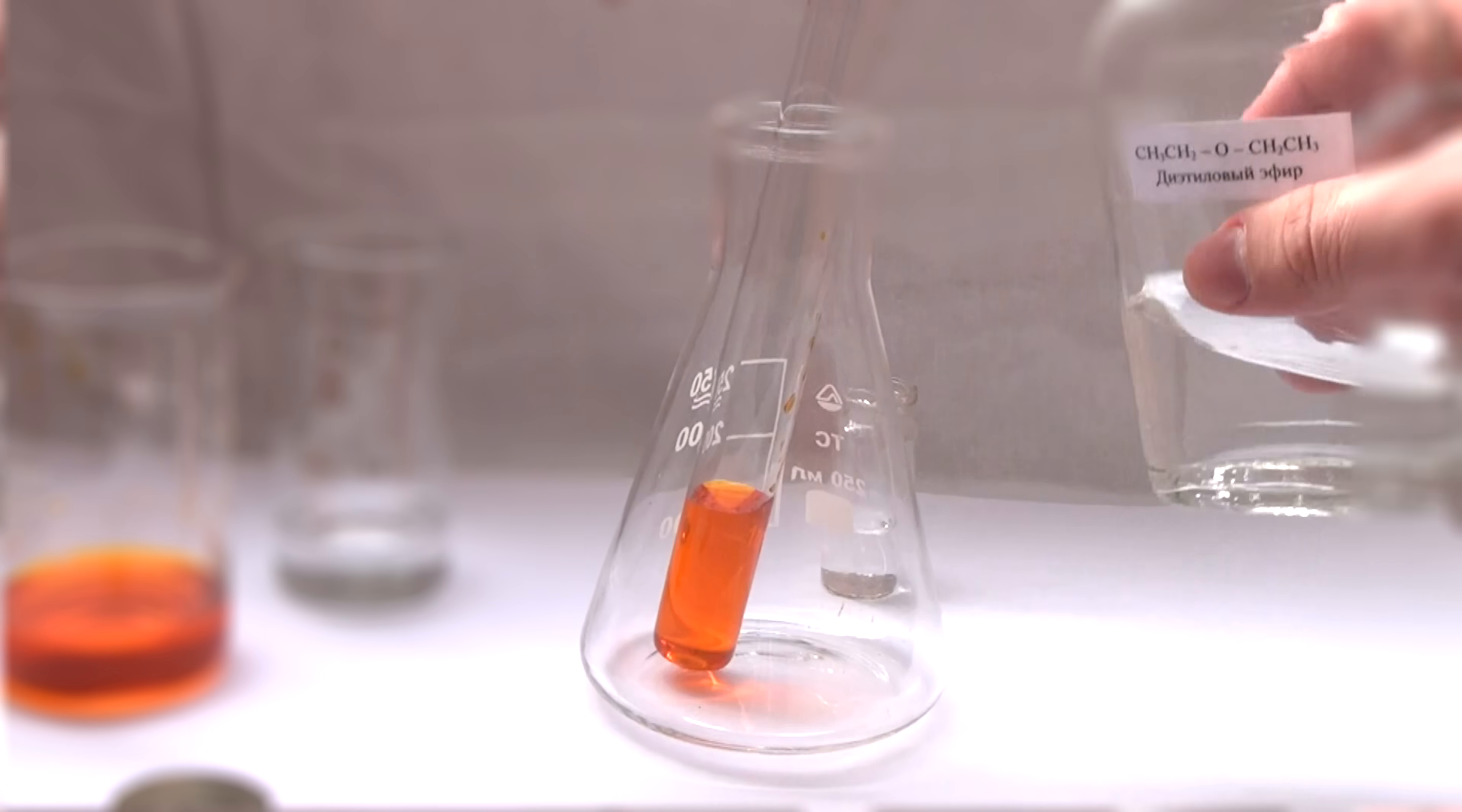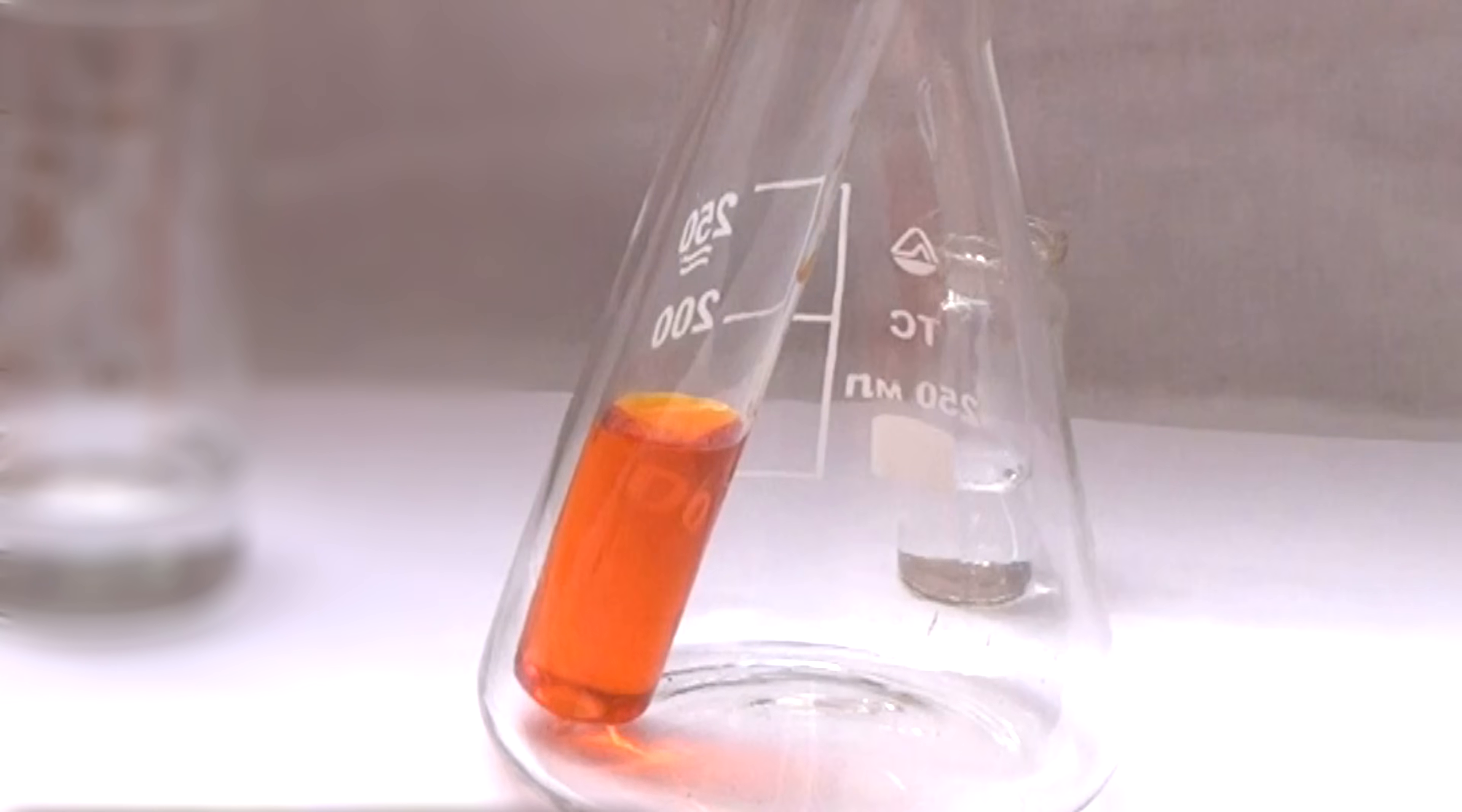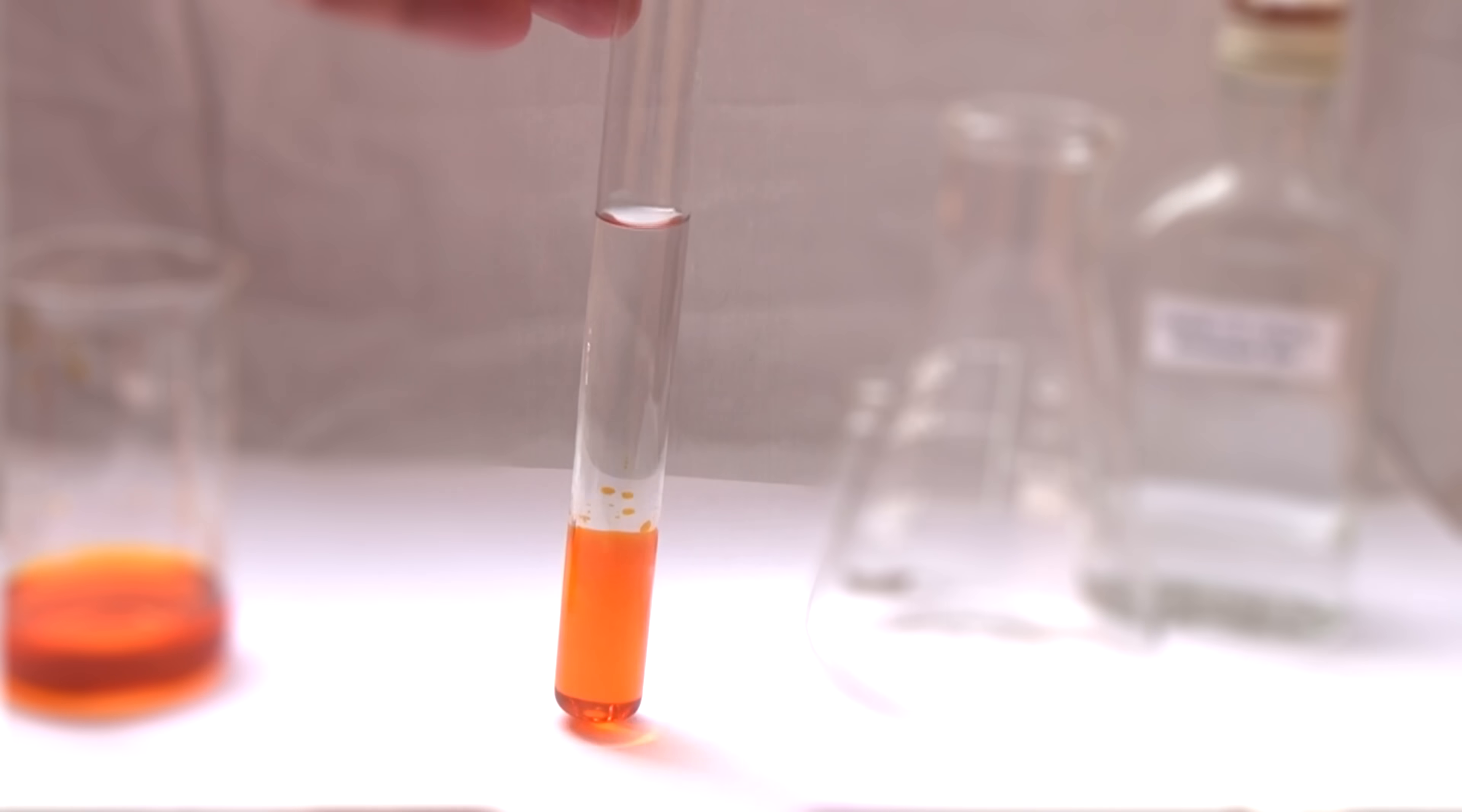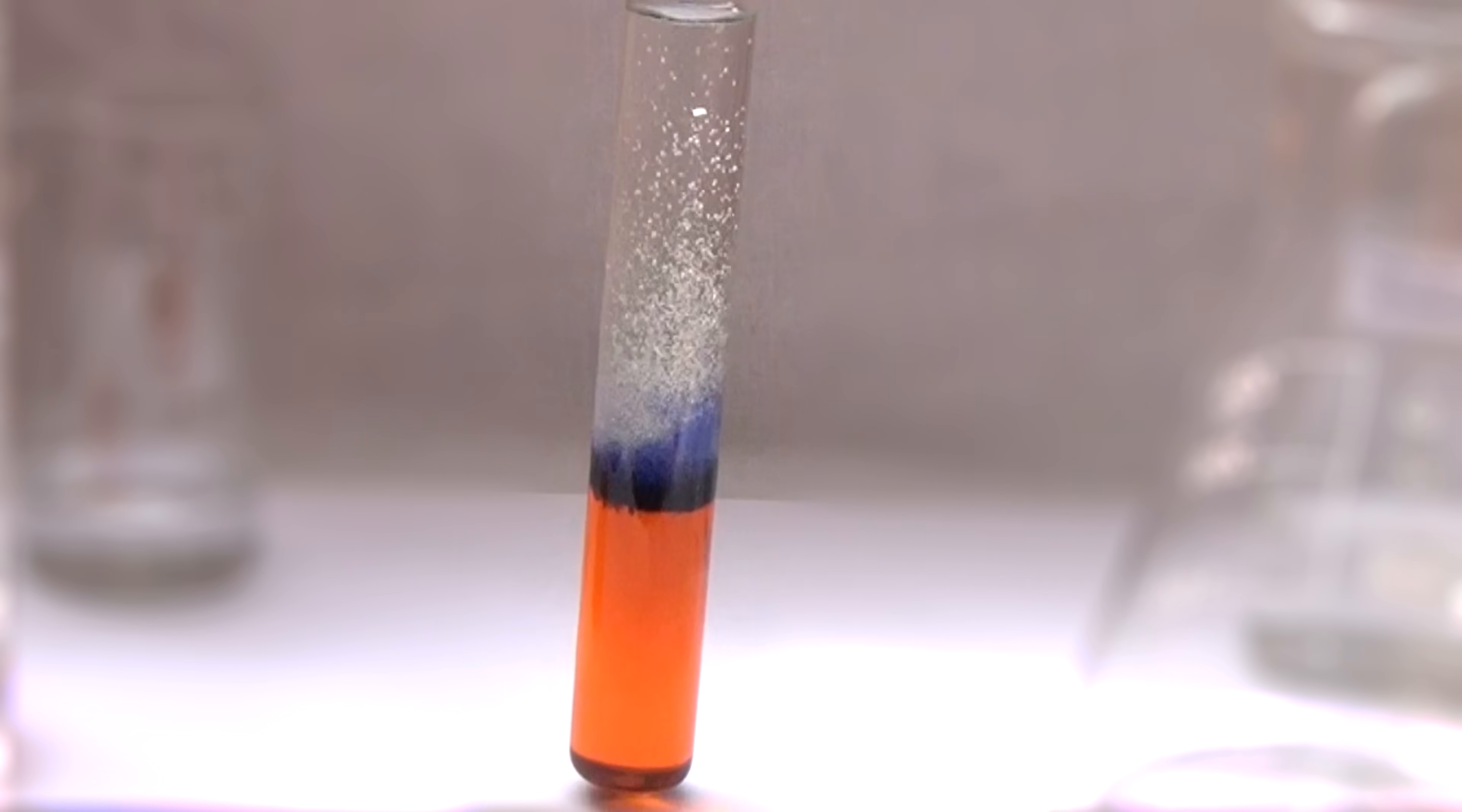To conduct this experiment, we will need a solution of potassium dichromate. Next, we need diethyl ether. Diethyl ether has a low density, so it will float on the surface of the solution of potassium dichromate. Next, add a small amount of sulfuric acid solution to our mix.